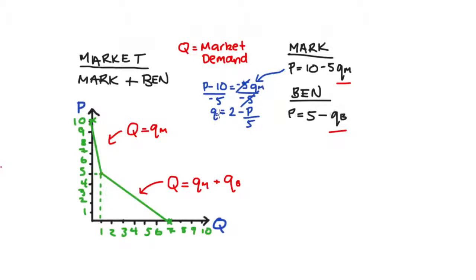We can do the same thing for Ben, so Ben's demand curve is just P equals 5 minus Q subscript B. So I'll take away 5 from both sides, and then divide both sides by negative 1, and we are left with Q subscript B equals 5 minus P. So that's it, that's our individual demand curves in terms of the quantity variable.